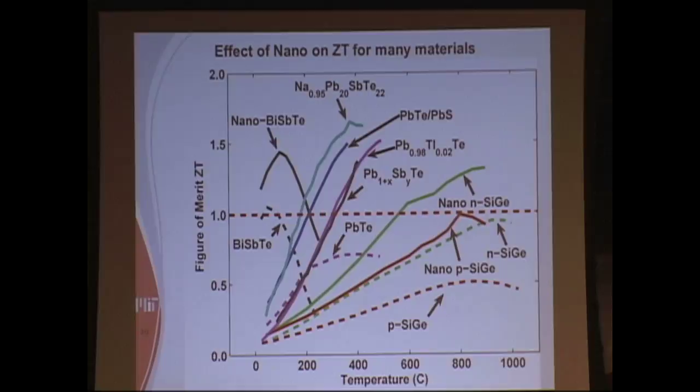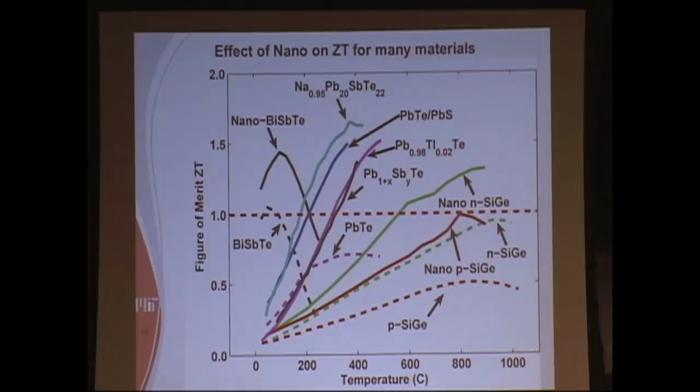So recent advances, I call that. Bringing down the figure of merit here, this is kind of a summary of many materials. So going from bulk to nano, let's take a given material. Let's take, for example, bulk - here's n-type silicon germanium, and then I want to go to nano. So nano is here, then take bulk, this should be p-type, one is n and one is p-type.